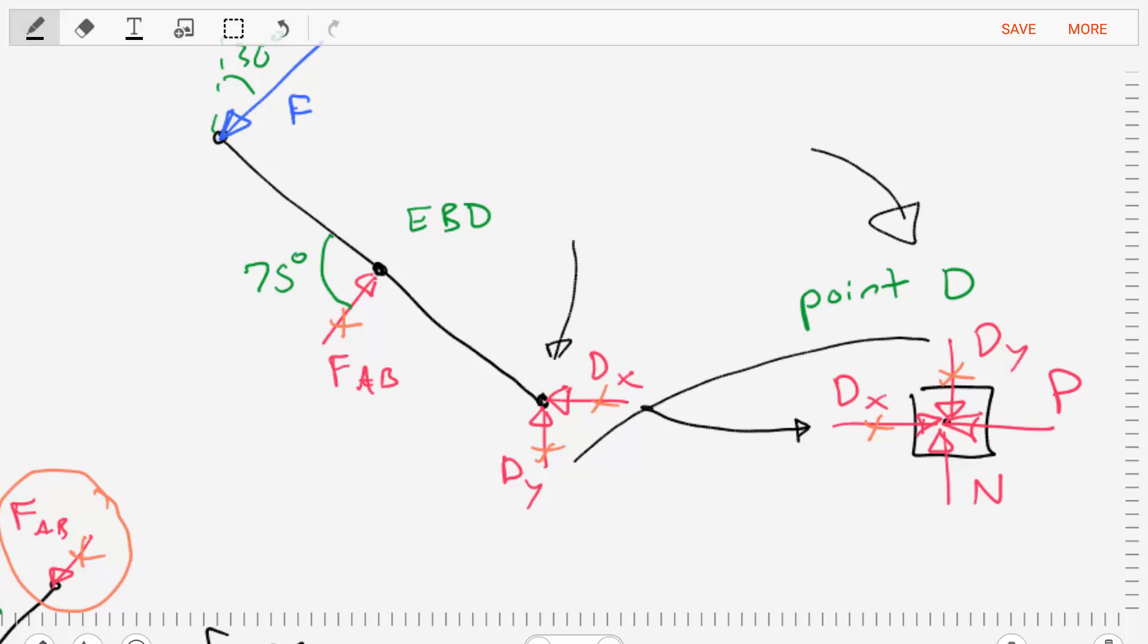DY is up in the first diagram. It's down in the pin connection. And then to counteract them, we end up with some normal force that's going to be in the can crusher, as well as some pressure, P, which is a force that's going to be transmitted into the can.